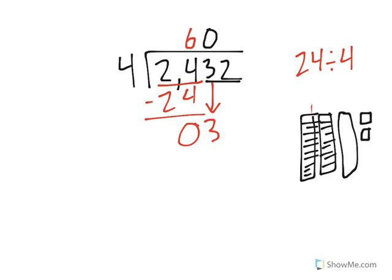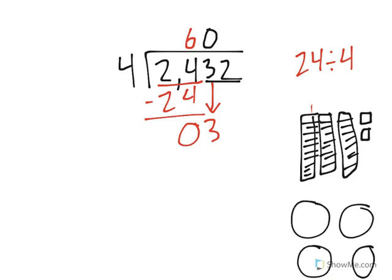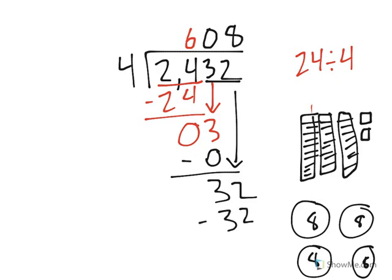And now we're splitting up 32 ones into 4 groups. Well, 32 ones split evenly into 4 groups would result with 8 in each group. You can see we're going to end up using 0 there. And then we'd have 32 ones. When we split those evenly into 4 groups, there would be 8 in each group, and all 32 would be used, giving us an answer of 608.